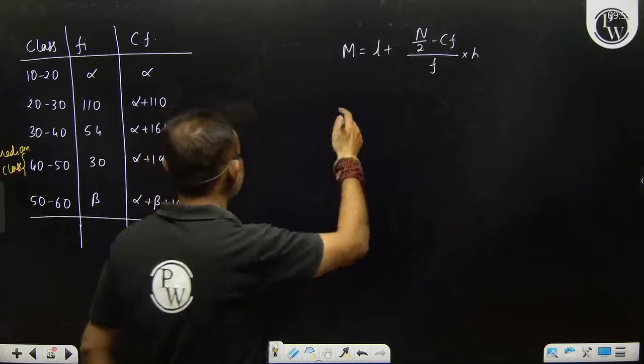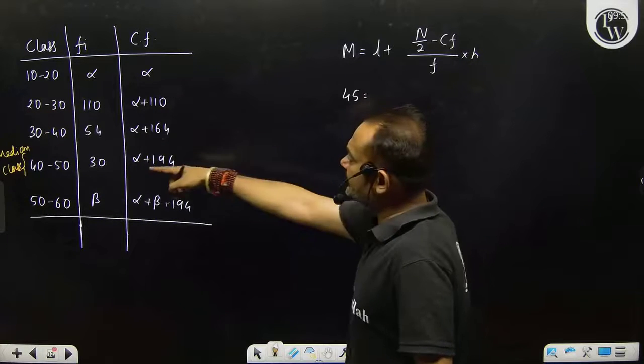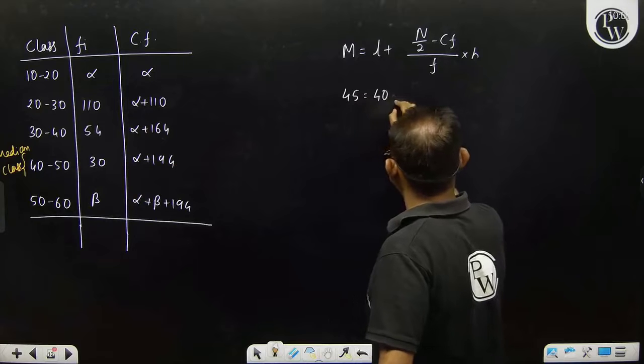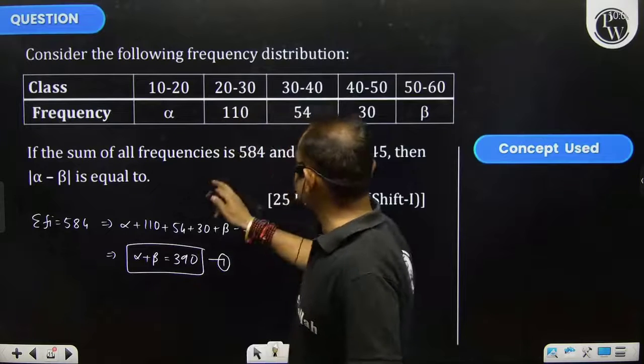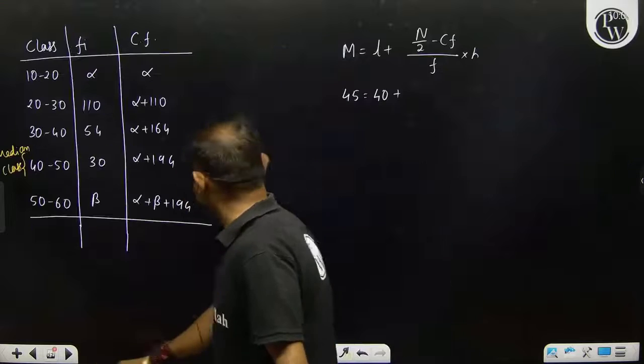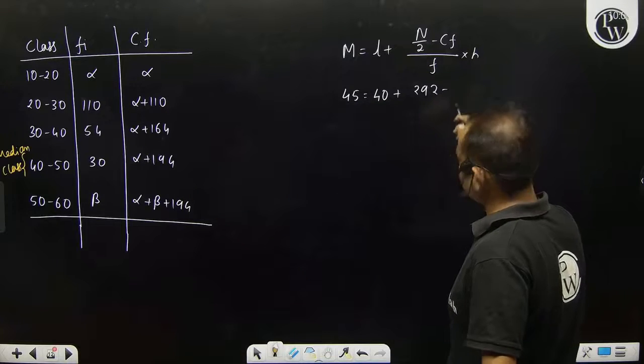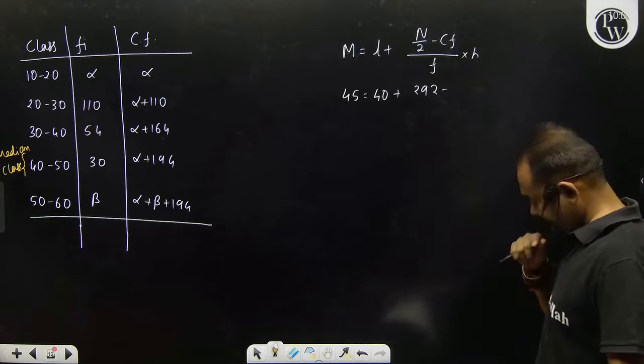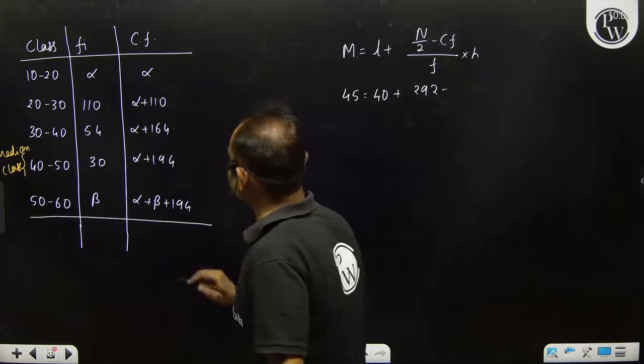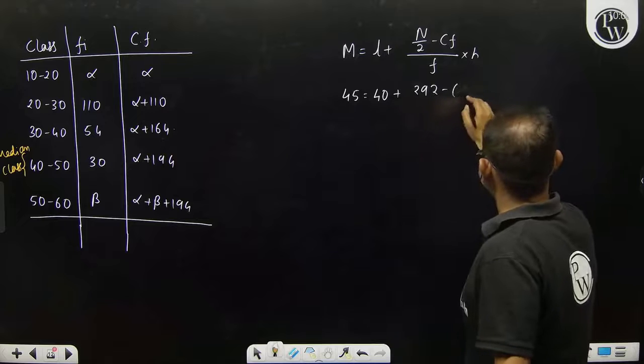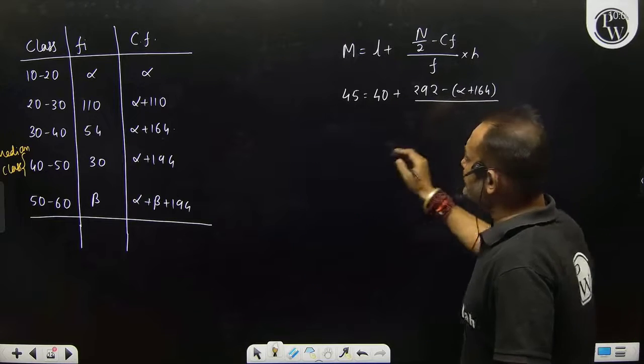Now use formula. Median is given 45, lower limit of median class is 40, N by 2, sum of all frequencies is given 584, so 584 divided by 2. CF, cumulative frequency before median class, this one. Frequency of median class.